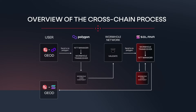who validate and sign a proof of the lock. Once the lock is verified, a corresponding transaction is triggered on the Celona network, minting an equivalent amount of GLD tokens. These newly minted tokens are then sent directly to the user's wallet address on Celona.